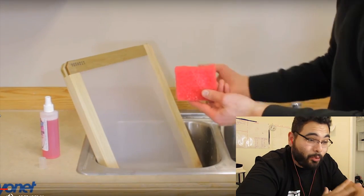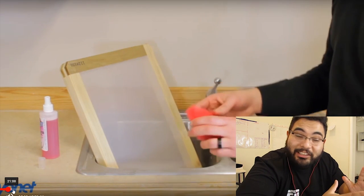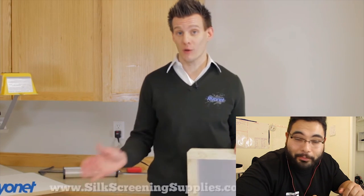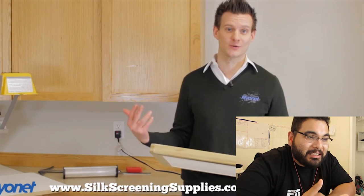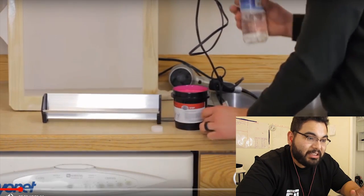The mesh on the screen that you want is 110 to 156. I have links to screens where I get them for about $20 a piece in the description below. The higher the mesh count, the more detailed stuff you could do, but 156 works great.